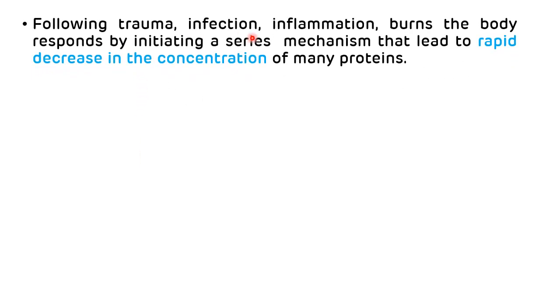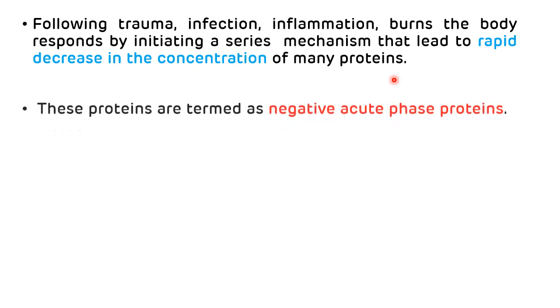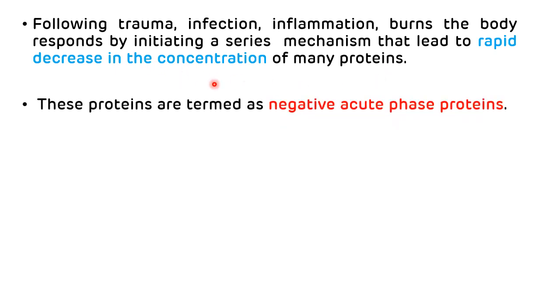Following trauma, infection, inflammation and burns, the body responds by initiating a series of mechanisms that leads to decrease in the concentration of many proteins. These proteins are termed as negative acute phase proteins because there is a decrease in the concentration of that particular protein.